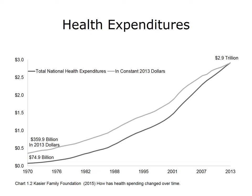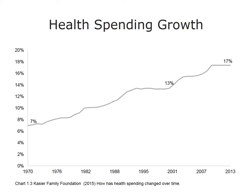Total health expenditures represent the amount spent on health care and health-related activities such as administration of insurance, health research, and public health, including expenditures from both public and private funds. The Kaiser Family Foundation also produced a graph showing that the proportion of the economy devoted to health has been increasing over time. In 1970, the U.S. devoted 7% of its gross domestic product to total health spending, both through public and private funds. By 2001, this represented 13%, and in 2013, the amount spent on health had increased to 17% of GDP.